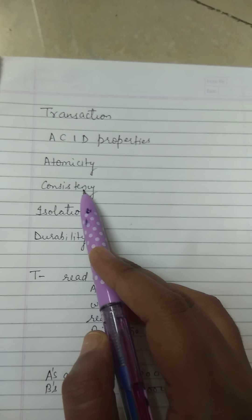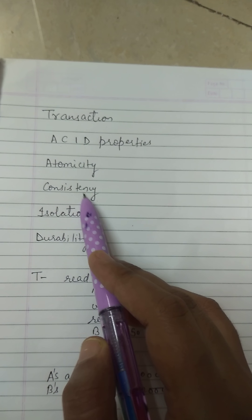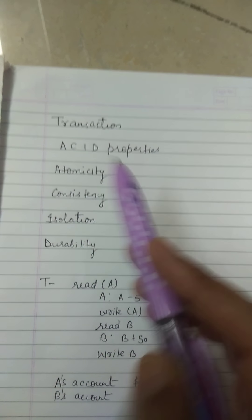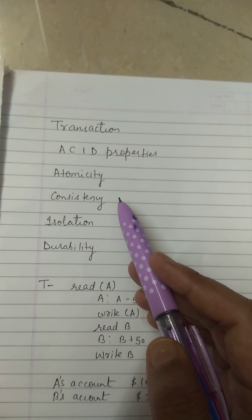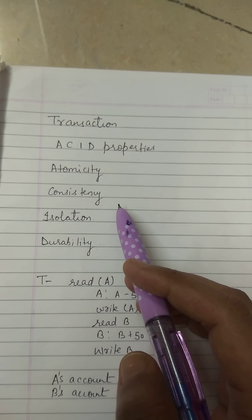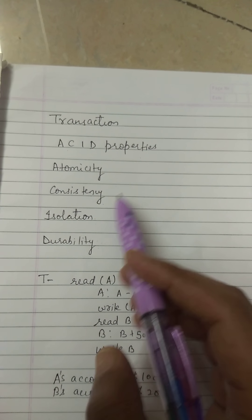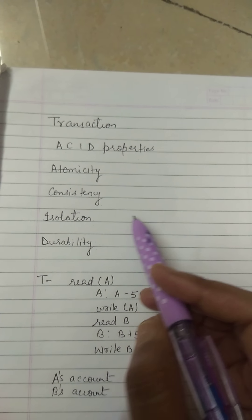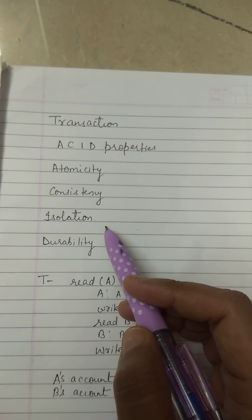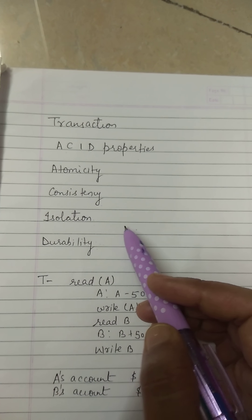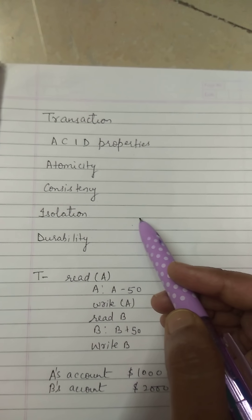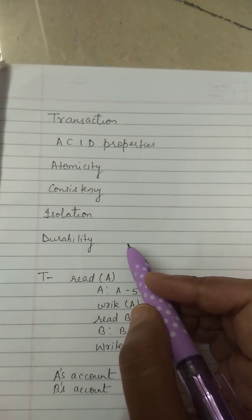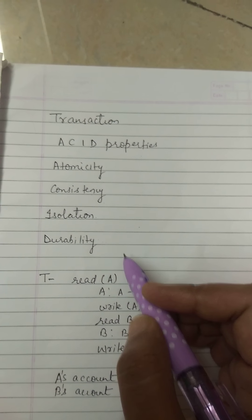Now what is consistency? Our database is initially in a consistent state and it should remain in consistent state after every transaction. Isolation: if multiple transactions are running concurrently, they should not be affected by each other. That means the result should be the same as the result obtained if the transactions were running sequentially.